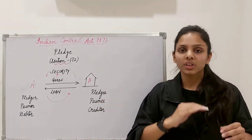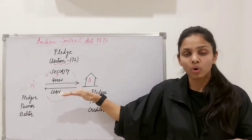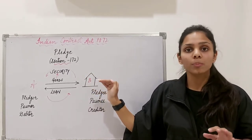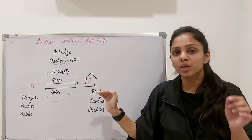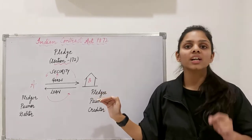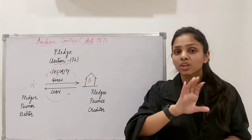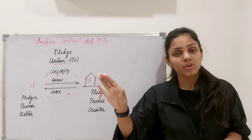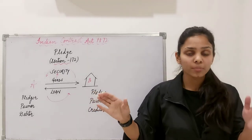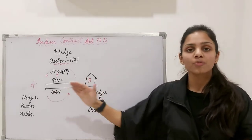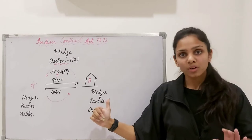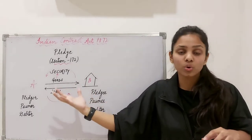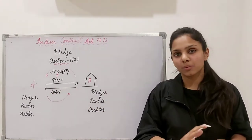Pledge means to keep something as 'girvi' — when you keep any good as a girvi with someone, for example a bank, pledge means keeping your goods as girvi, which means giving them as security. Bailment of goods happens — delivery or transfer of physical possession of goods from one person to the other, from pledger to the pledgee — but it is as a security. Those goods are bailed as a security and not for any other specific purpose. That is the only differentiation between Contract of Bailment and Pledge.